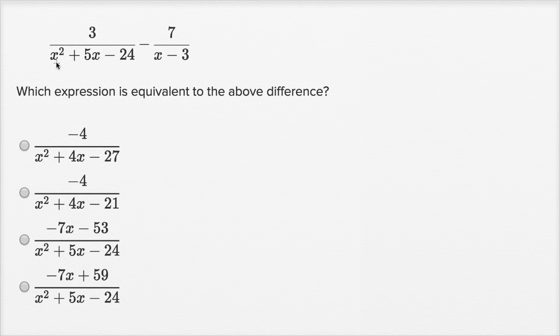And so one thing we can do is, let me rewrite the whole thing. So three over x squared plus five x minus 24, minus seven over x minus three. Now, instead of the brute force way to just multiply the denominators and say that's gonna be a common multiple, there might be a cleaner way of doing that, especially if x minus three is one of the factors of this. So let's see if this is.